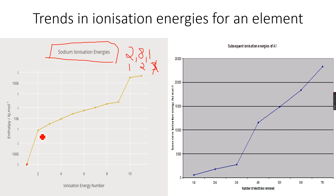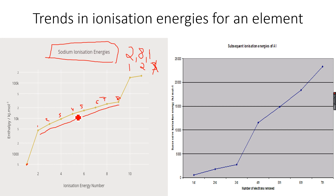Then you see there is a mild increase — not a steep increase — for the next eight electrons, because now we are removing electrons from the second shell. There are eight electrons in the second shell, and whenever we remove an electron, the ionization energy increases gradually.